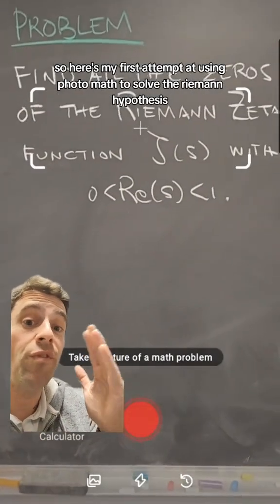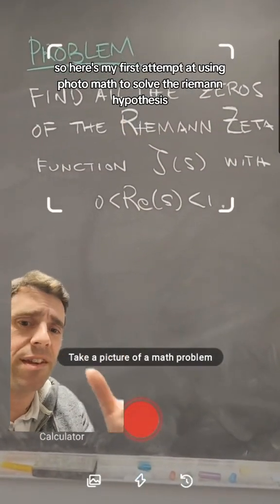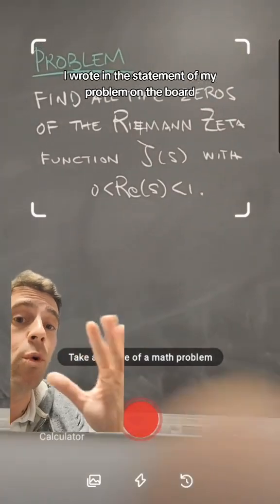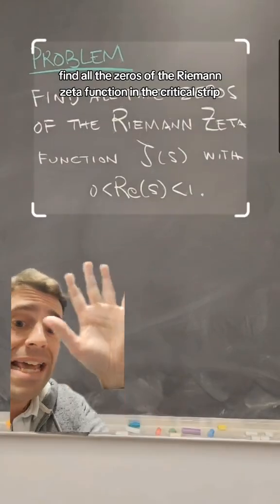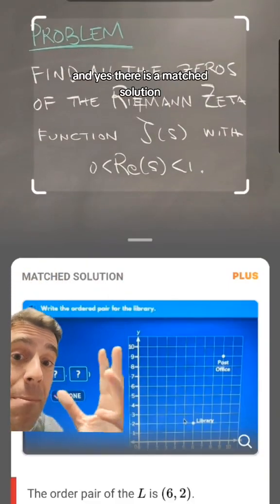Okay, so here's my first attempt at using PhotoMath to solve the Riemann hypothesis. I wrote the statement of my problem on the board: find all the zeros of the Riemann zeta function in the critical strip. It does its magic, and yes, there is a match solution.